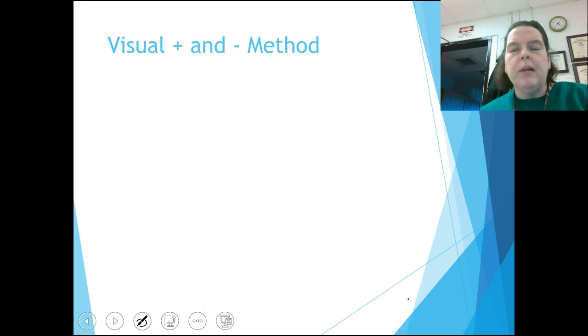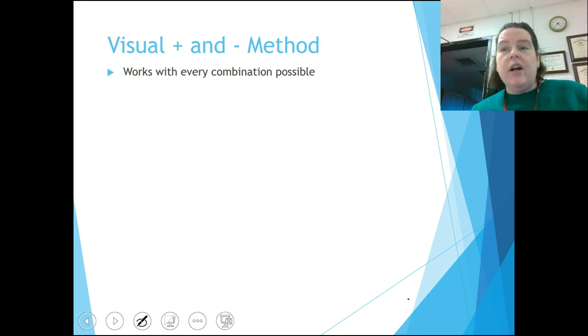Okay, the next method is the visual plus and minus method. This is a method in which we do kind of the same thing with the dots. But this method works every single time for every combination, even the ones that are in the D block that change charge.